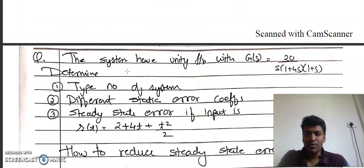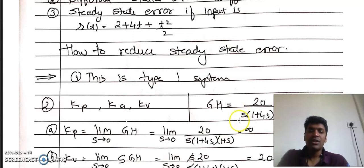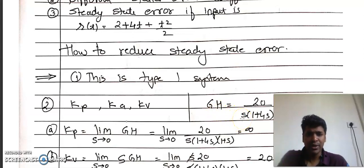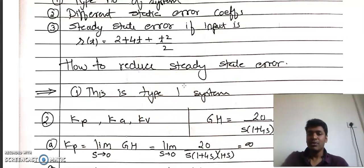We need to find the type number of the system. Type number is very simple — how many poles are there at the origin. In other words, what is the highest power of s in the denominator of G(s)? The highest power here is 1, so the type number is 1. This is your Type 1 system.